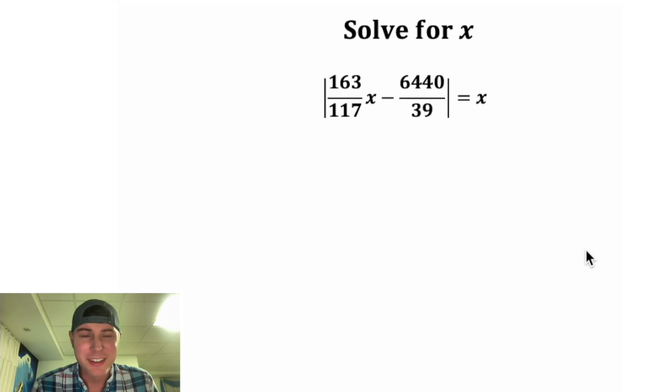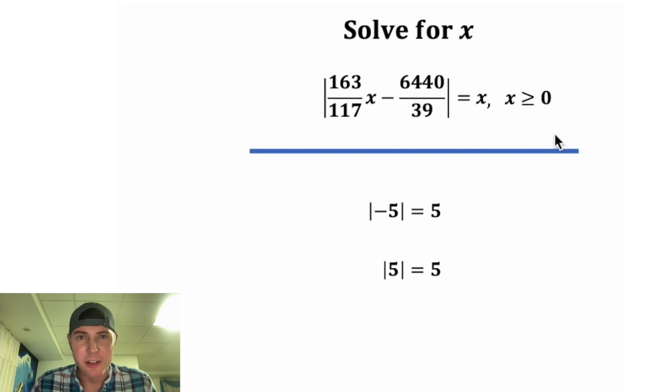This is an absolute value equation. The way absolute values work, if you have the absolute value of negative 5, it outputs 5, and if you have the absolute value of positive 5, it also outputs positive 5. Since this x is equal to an absolute value, we know that it must be greater than or equal to 0.